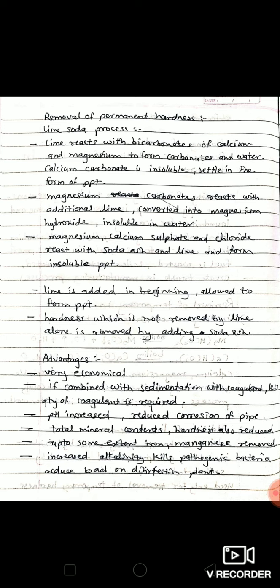For the removal of permanent hardness, lime soda process is used. If water contains the sulfates of calcium and magnesium, simply addition of lime cannot remove the hardness, but if soda ash is added in lime, the non-carbonate hardness can be easily removed. This method is known as lime soda process.